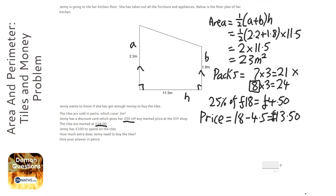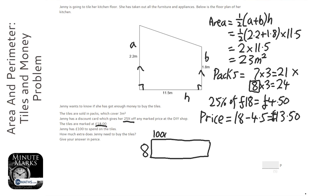So each pack of tiles is £13.50, and I need to get 8 of them. So the last step is to do 8 times £13.50, so I'm going to do this in pence.